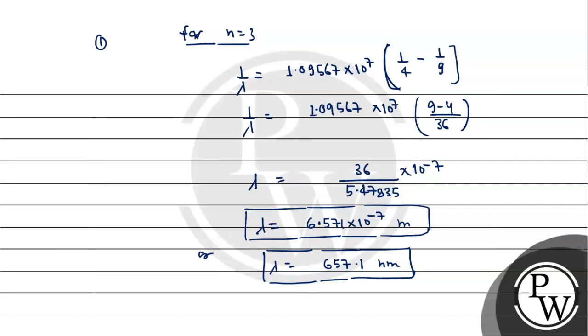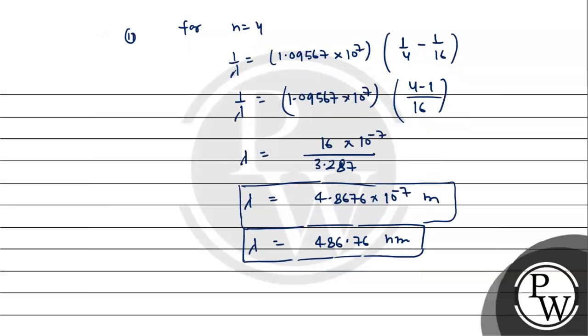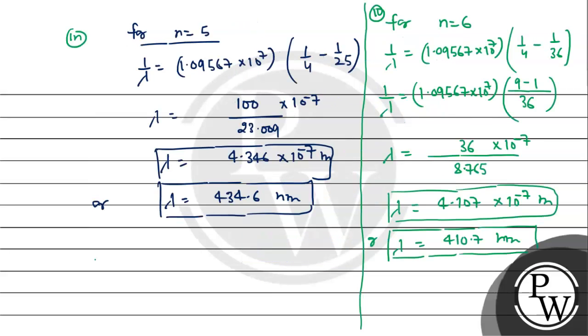So the final answers are: for N equals 3, 657.1 nanometer; for N equals 4, 486.76 nanometer; for N equals 5, 434.6 nanometer; and for N equals 6, 410.7 nanometer. These are the answers. Hope you understood it. All the best.